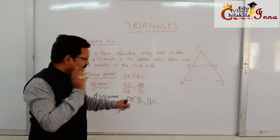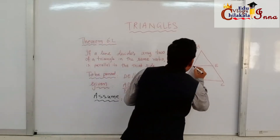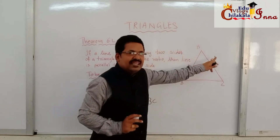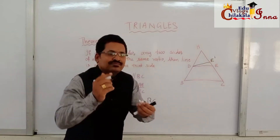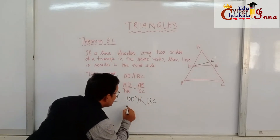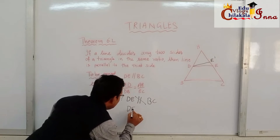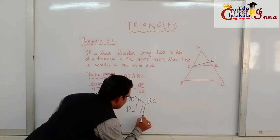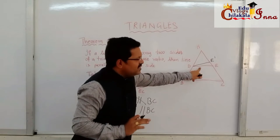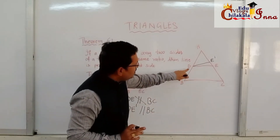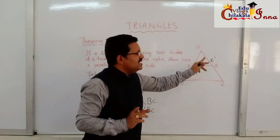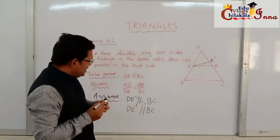If DE is not parallel to BC, there should be something else that is parallel to BC. So from D, we draw another line called DE', where DE' is parallel to BC. So our assumption is that DE is not parallel to BC, and instead there is another line DE' that is parallel to BC.